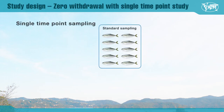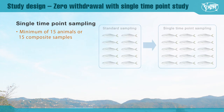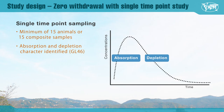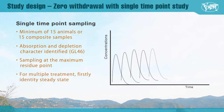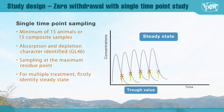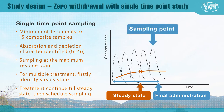For zero-day withdrawal, a single sampling time point study could be used. For this study, a minimum of 15 individual animals or 15 composite samples are to be collected. Absorption and depletion characteristics are to be identified with the study as described in VICH GL46. The sampling time should be chosen when the maximum concentration of residue is expected. For the multiple treatment case, first identify steady state — the time when the trough value, or the concentration just before next treatment, reaches a plateau — then identify duration of treatment, and after the final treatment, sampling is to be done at the maximum concentration point.